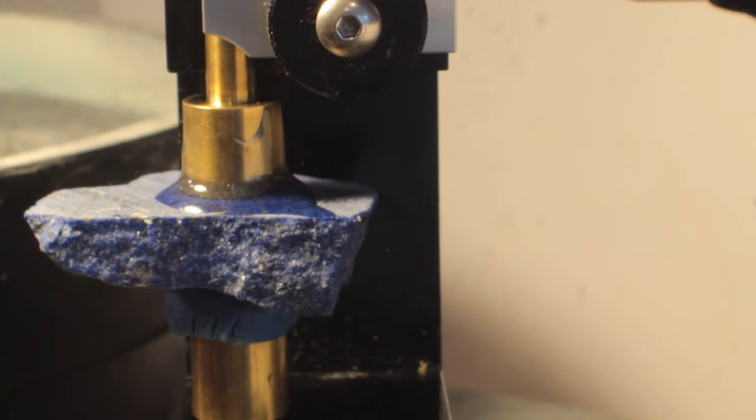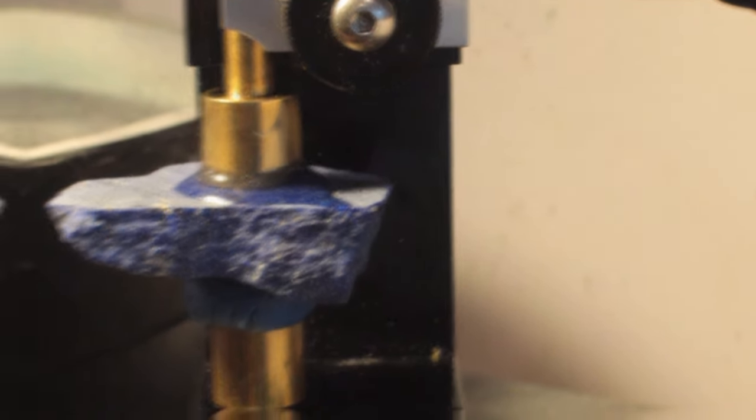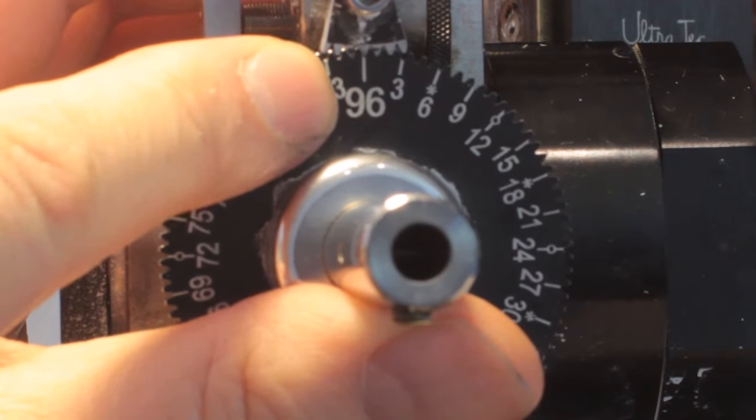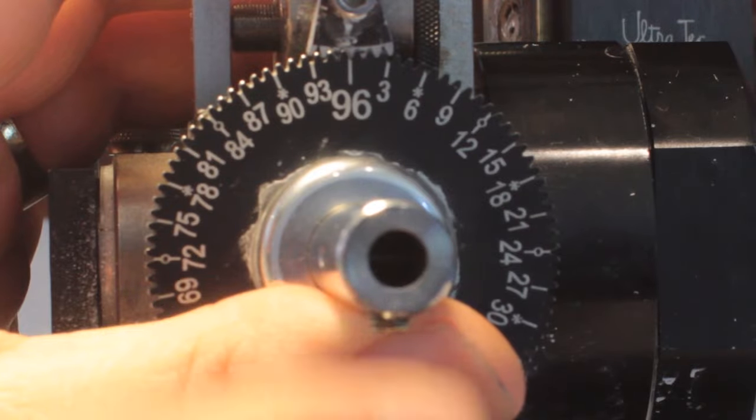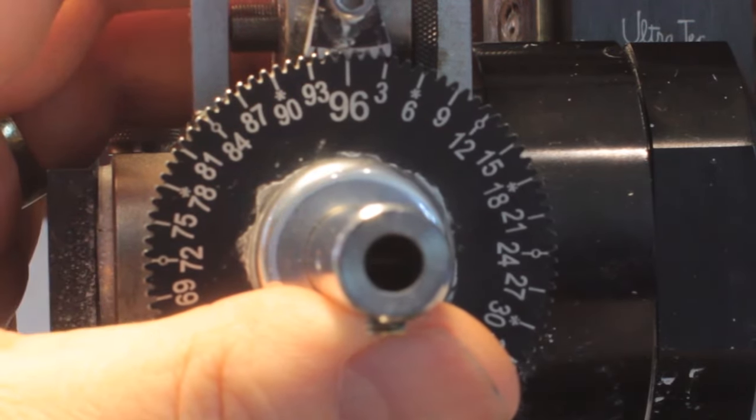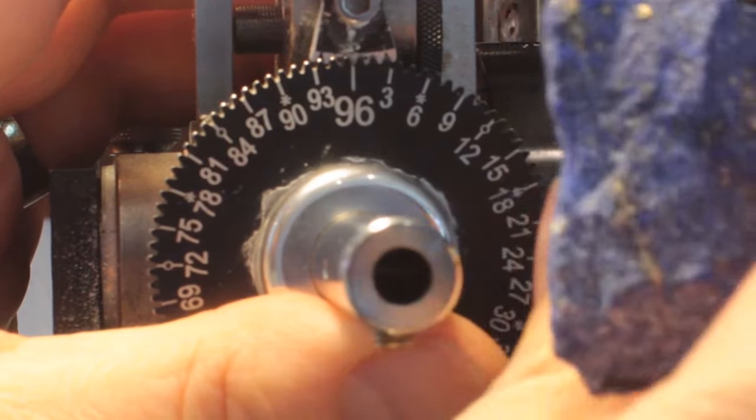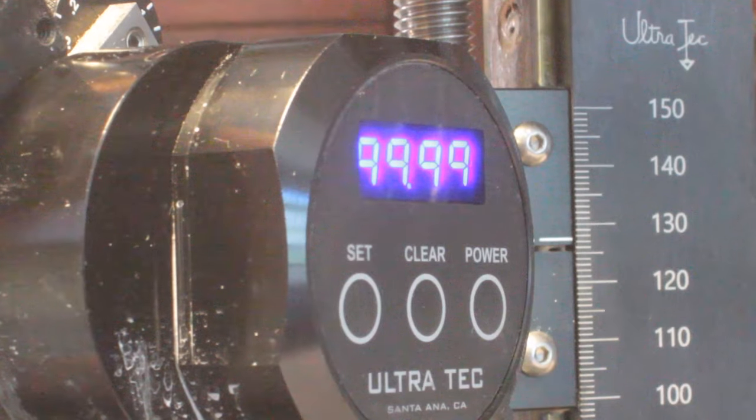So then I let it set overnight and harden. For our lapis, we set the tooth of our index at 96, and this is the up and down part of the cross, the bottom part down and the top part up. So we orient our stone that way, put it in 96 and tighten it down, and then we're ready to start preforming our lapis.